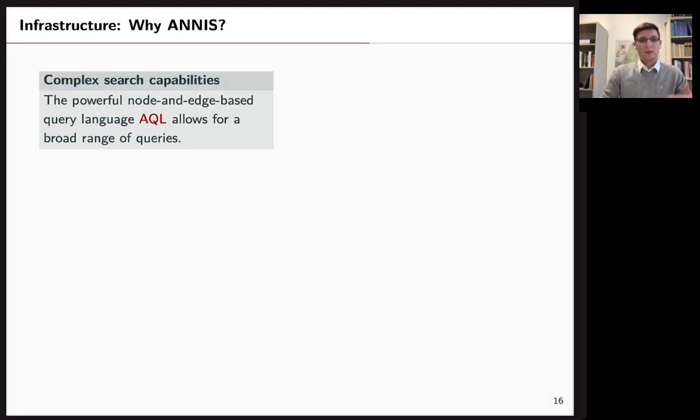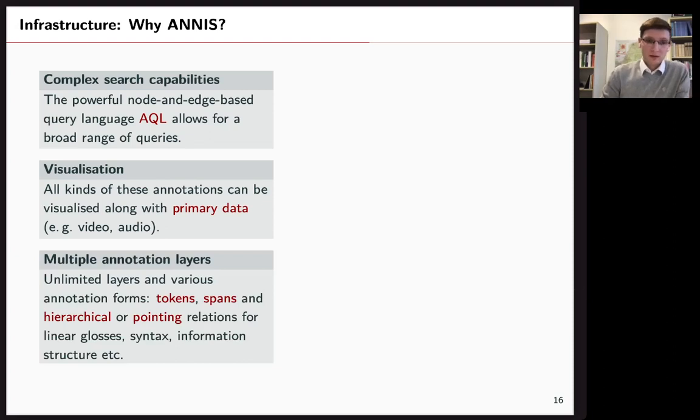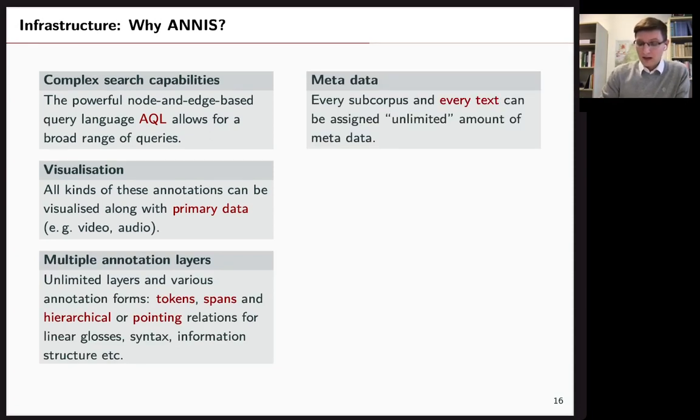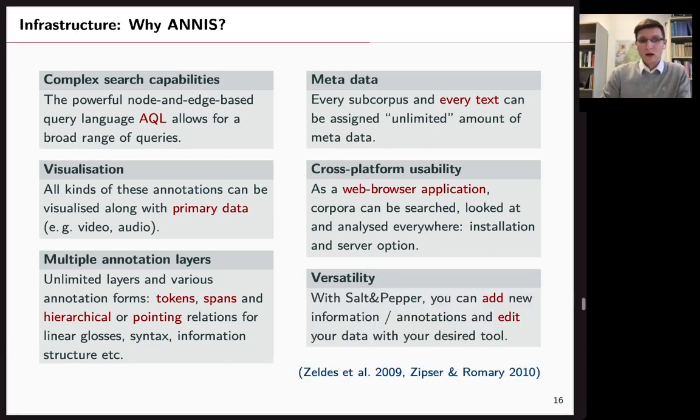So why do we use ANNIS? First, it has a really powerful AQL query language. It can visualize primary data next to our annotations like video and audio. You have multiple annotation layers like tokens, spans, hierarchical and pointing relations. You can add lots of metadata to each text that is in your subcorpus. It has a web browser application. So you can install it everywhere. And if you want, you can even use a server option where you basically have a link you go to and then you have ANNIS. And with Salt and Pepper, it's really versatile where you can add and edit data like we have seen just now.